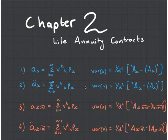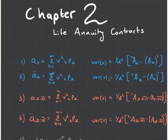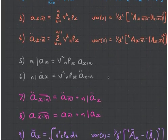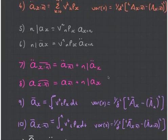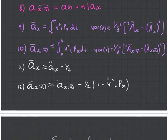Hey guys, it's MJ, the student actuary, and today we're going to be talking about Chapter 2, which is the life annuity contracts. I've got over here just the list of all the little formulas that we're going to be going through.